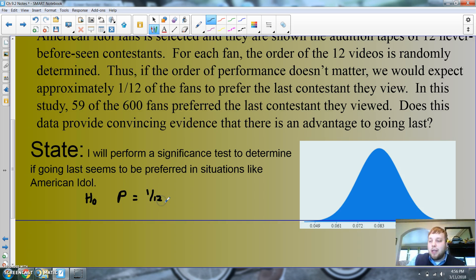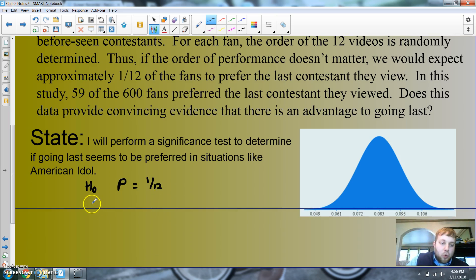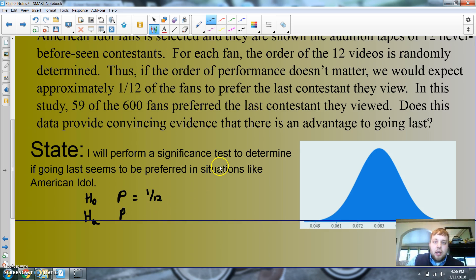What are we checking to see about? What is Ha? We're just seeing in this study, does the data provide convincing evidence that there is an advantage to going last? So that means we want to see if you get better or more than 1/12th. That's gonna be another more than. So that is my state.